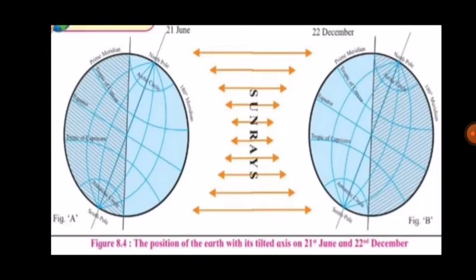In the region from the Arctic Circle to the North Pole, the Sun remains visible for 24 hours or longer. At the North Pole, the Sun is visible in the sky from 22nd March to 23rd September — that is, for six months. A similar situation prevails in the region between the Antarctic Circle and the South Pole in the period from 23rd September to 21st March.